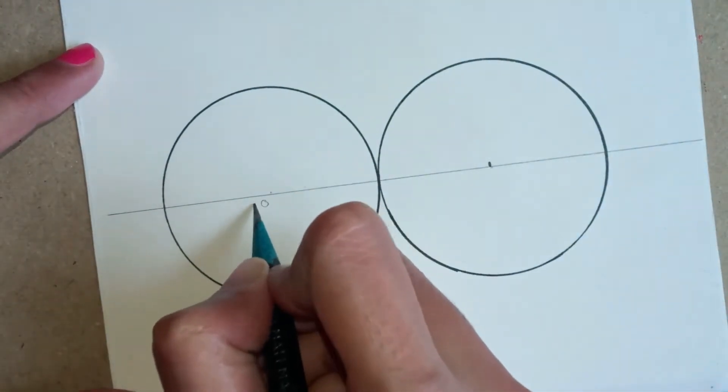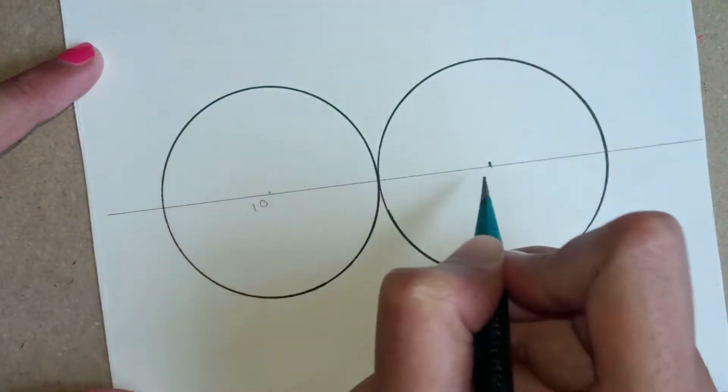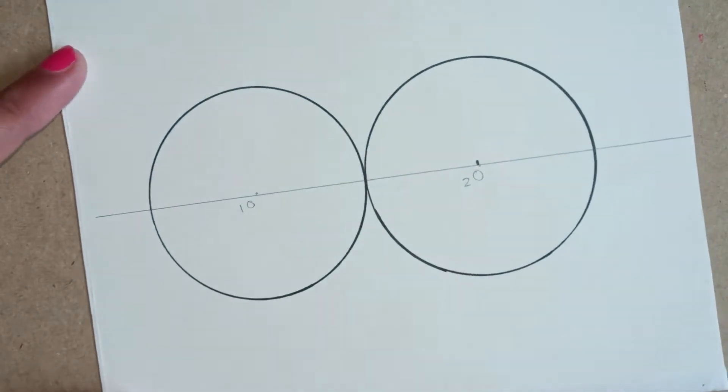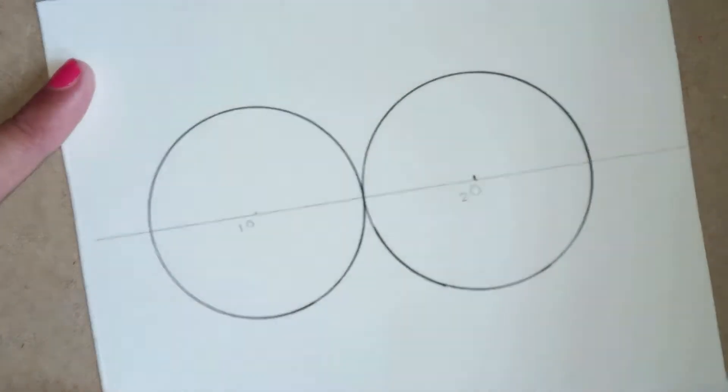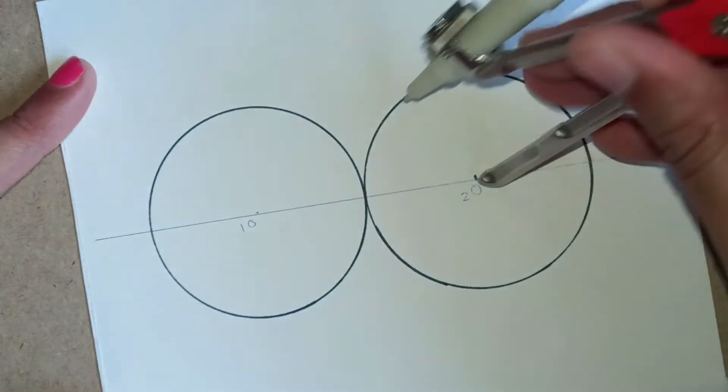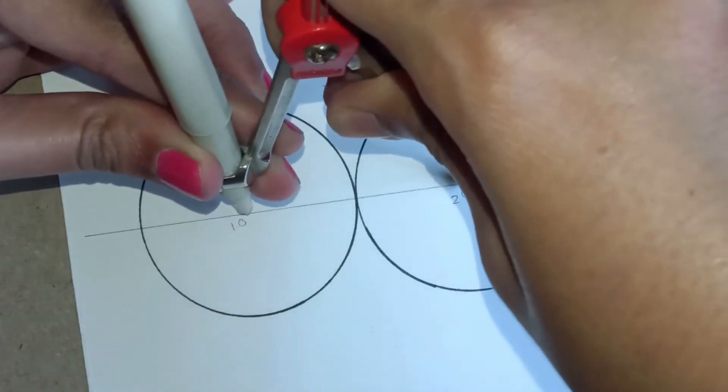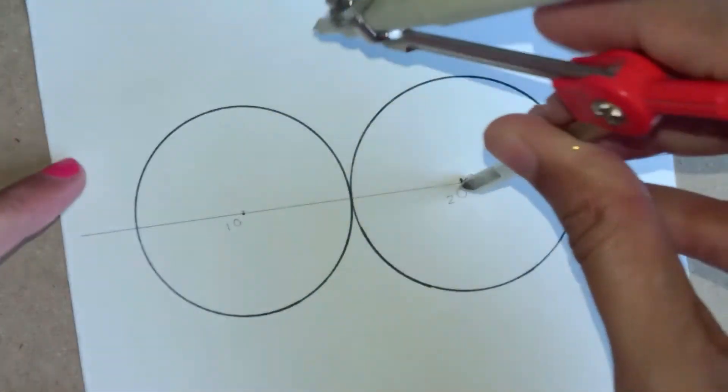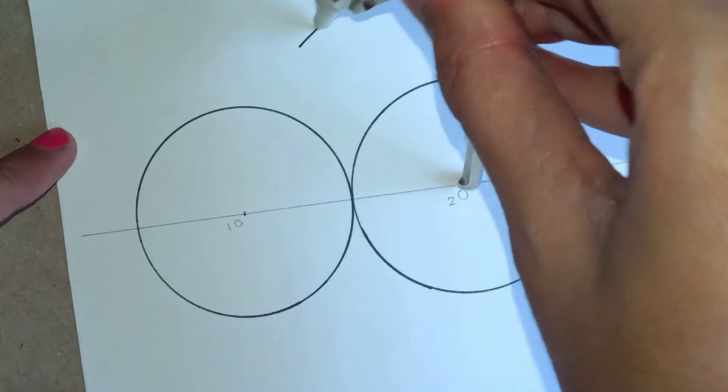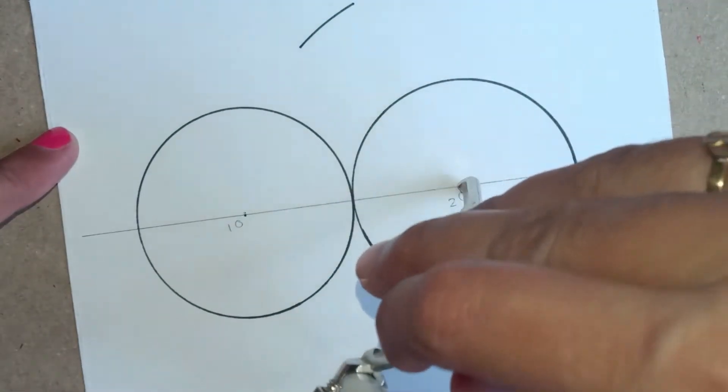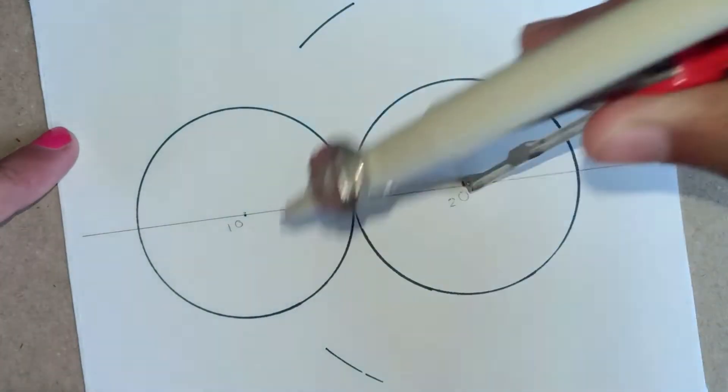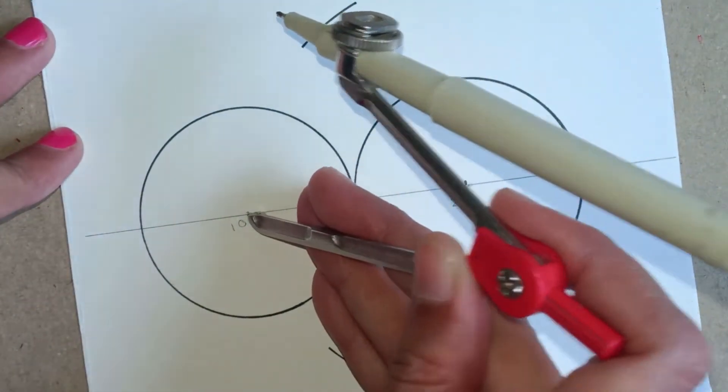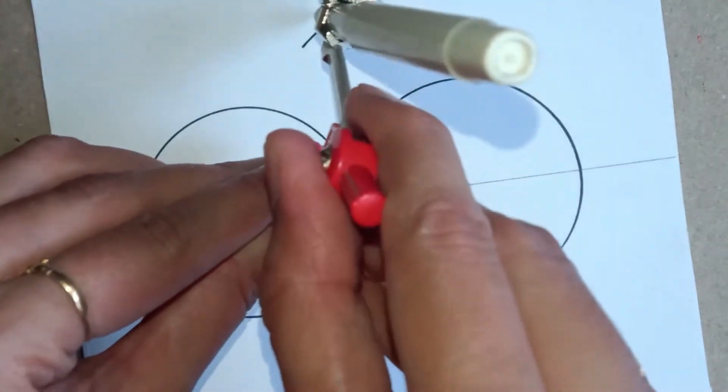We will name the centers as O1 and O2. Now we have to draw a perpendicular line to the horizontal line. For that, we take the distance between the compass of O1 and O2, and we draw two arcs upside and downside from O2. Then we intersect these two arcs from O1.